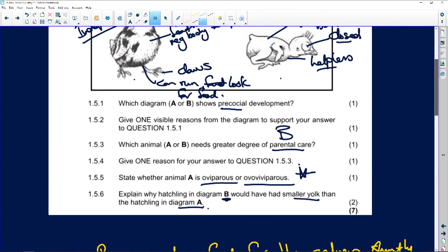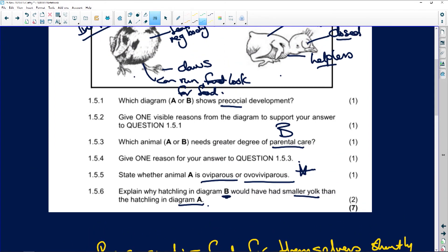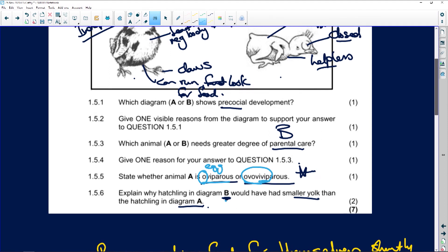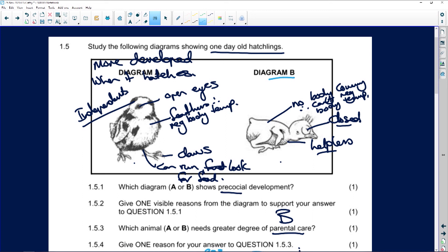So let's just go back here. So it says oviparous and ovoviviparous. Remember, ovoviviparous is a combination of oviparous and viviparous. And ovoviviparous, the O for egg. Explain why hatchling in diagram B would have a smaller yolk than the hatchling in diagram A. Well, the hatchling in diagram B, the development isn't that great. It doesn't have that much development. So if you look at this poor little thing here, it can't feed itself. Can't feed itself. It has no body covering. The eyes are closed. It is helpless. It is poorly developed. Any of those would have given your mark for that question.